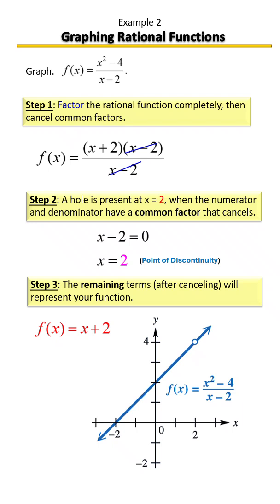This went from a rational function to a linear function once the common factors were canceled out. Notice here that we have a hole in the graph right there at 2.